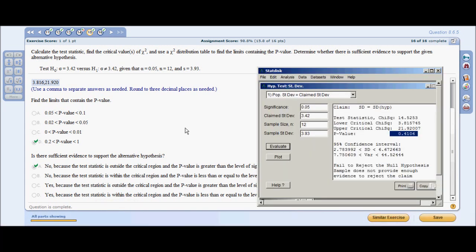And is there sufficient evidence to support the alternative hypothesis? Since we fail to reject the null, our answer is no. It is outside the critical region and p-value is greater than the level of significance.